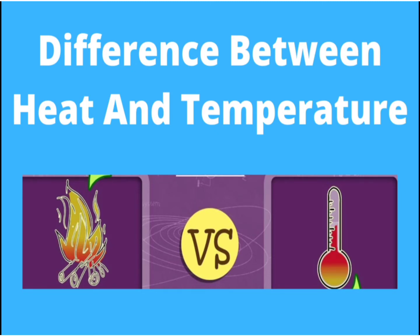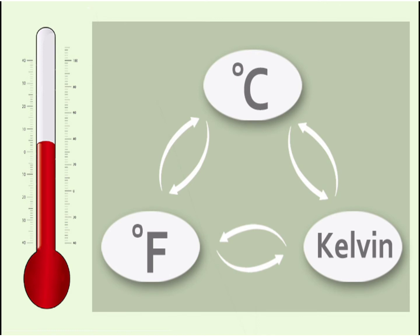Next, let us understand what we mean by heat and temperature. Heat means the transfer of thermal energy between molecules within a substance. Heat is measured in joules and measures how much energy moves or flows. Temperature is used to measure the heat present within a substance. Temperature is measured in Celsius (°C), Kelvin (K), or Fahrenheit (°F).